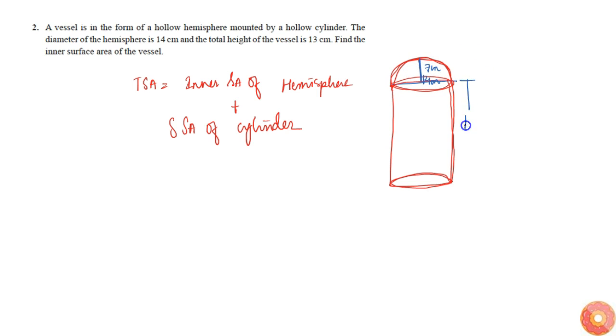It's given from here till here it's 13 centimeters. Inner surface area of hemisphere is 2πr² plus side surface area of cylinder will be 2πrh. This becomes 2πr(r + h). That will be equal to 2 × 22/7 × 7 × (7 + 13). This will become simply 2 × 22 × 7 (7 will get cancelled) × 20, so that is simply 880 square centimeters.